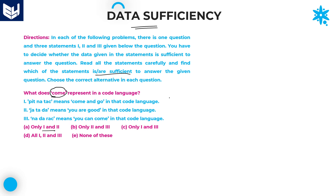Option A: only statements 1 and 2. Combining both 1 and 2 — 'cum' is present in statement 1 and statement 2, but there are no common codes. 'end' is not there, 'go' is not there. So you cannot say exactly what the code for 'cum' is — whether it is 'spit', 'na', or 'tabca'. We don't know exactly, so you can eliminate option A.